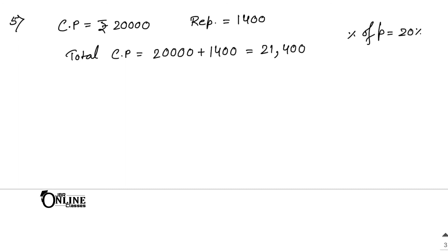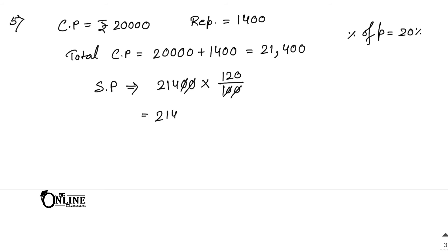Find the selling price. SP equals total CP into (100 plus profit%) divided by 100. For profit write 100 plus 20; for loss write 100 minus that value. So SP equals 21,400 into 120 divided by 100. The zeros cancel out: 214 into 120 equals 25,680 as your final answer.